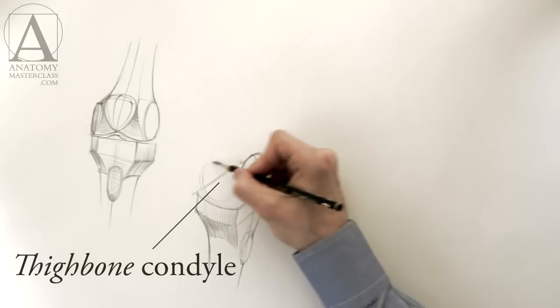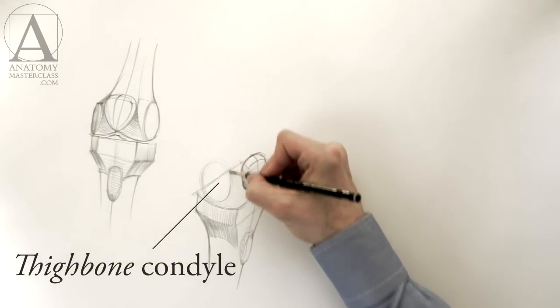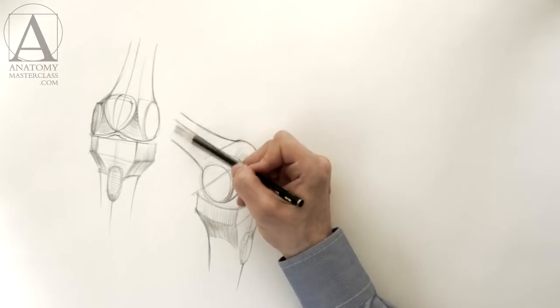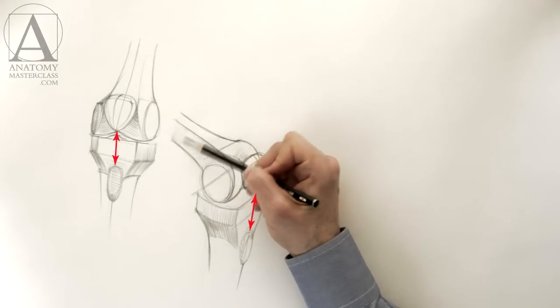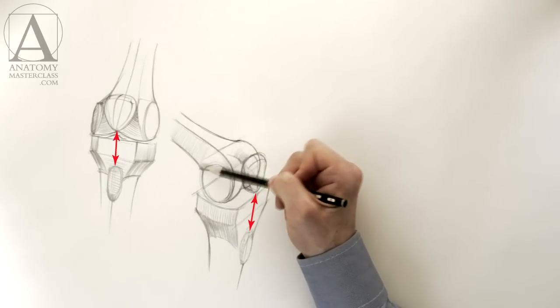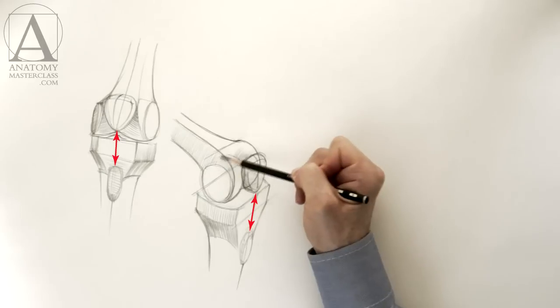Here you can see the condyle of the thigh bone. It has a round shape which makes it a hinge. You can see that the distance between the kneecap and the tibial tuberosity remains the same regardless of the bent or extended position of the leg.